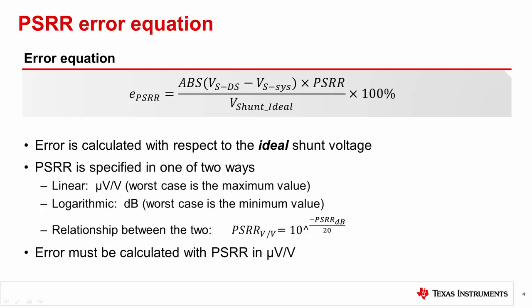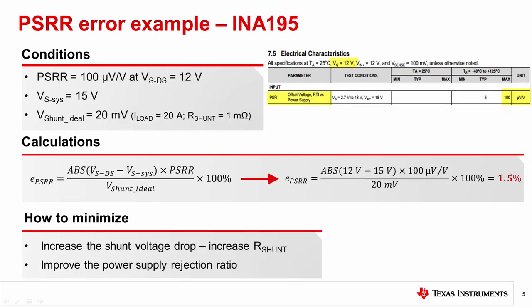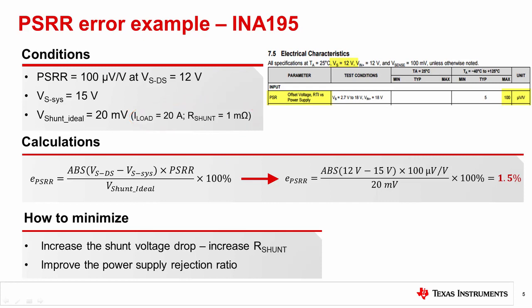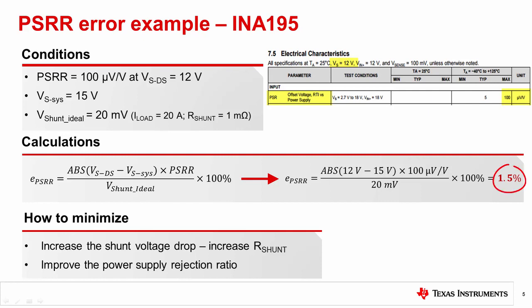Let's calculate the PSRR error in an example system with a nominal load current of 20 amps and an ideal shunt resistance of 1 milliohm. We'll pick the INA195 as our amplifier. The ideal shunt voltage equals load current times shunt resistance, which results in 20 millivolts. The supply voltage utilized in the system is 15 volts. As mentioned, if PSRR is specified logarithmically, it first needs to be converted to a linear specification. But in this case it is already specified linearly. Using our PSRR error equation, we calculate that the resulting error is 1.5%.